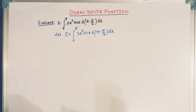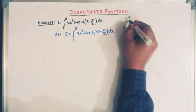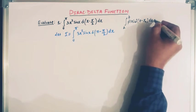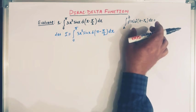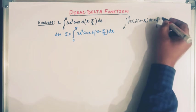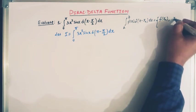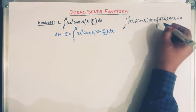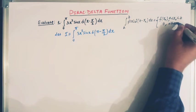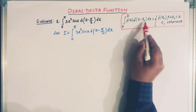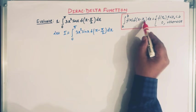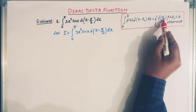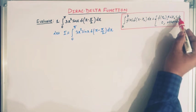We know that if we integrate from a to b: f(x)·δ(x - x₀)dx, then by the sifting property of the Dirac delta function, this integral equals f(x₀) when x₀ lies between a and b, and the value of this integral is 0 otherwise. The delta function δ(x - x₀) takes the value of the function at x equal to x₀, provided x₀ lies between a and b.